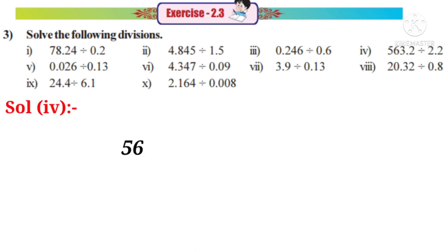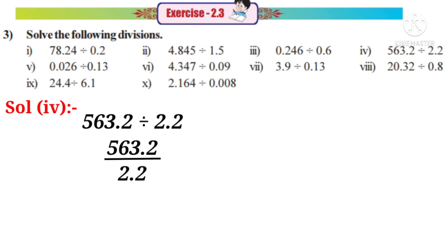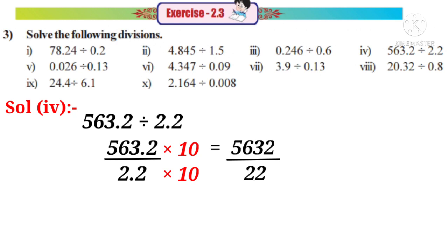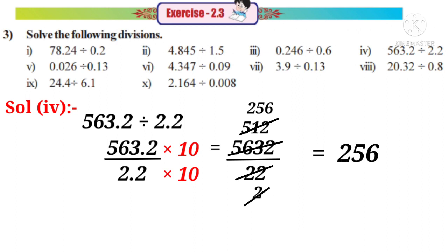Solution 4: 563.2 divided by 2.2, that means 563.2 by 2.2. Observe that there is only one decimal place in the denominator. So we have to multiply with a number which has only one zero after 1, that is by 10. On multiplication, the decimal place will shift right side after one digit. So the numerator becomes 5,632 by the denominator becomes 22. On simplification by 11, then by 2, the answer is 256.